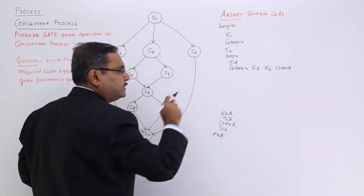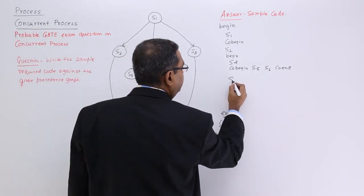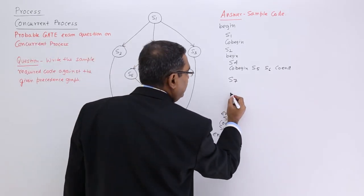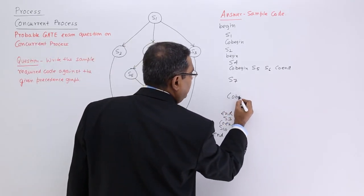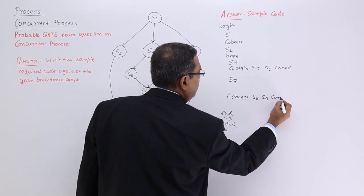I could have written it this way also. Then S7 will come, then again S8, S9 will be coming in parallel. So co-begin, S8, S9, co-end.